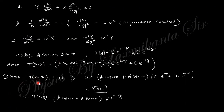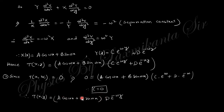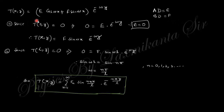Now apply the boundary condition: at any x, as y tends to infinity, T equals 0. If y goes to infinity, the exponential term e^(+λy) goes to infinity. Since the left-hand side is 0, the right-hand side cannot be infinity, so the constant C (coefficient of e^(+λy)) must be 0. After putting C equals 0, multiply the remaining constants and relabel them as E and F to reduce the number of constants from three to two, making it easier to find the general solution.